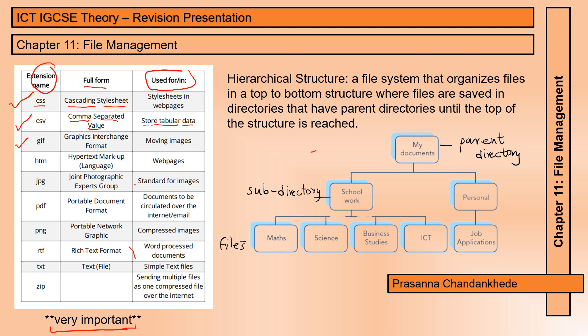GIF stands for Graphics Interchange Format, which is used for moving images or animations. HTM stands for HyperText Markup Language — we also have HTML, where the T stands for Transfer — and it is used for displaying web pages.